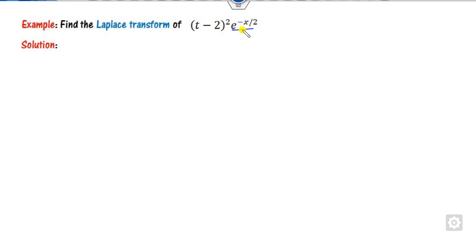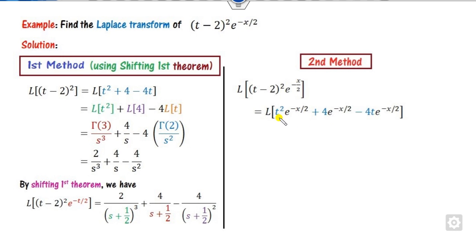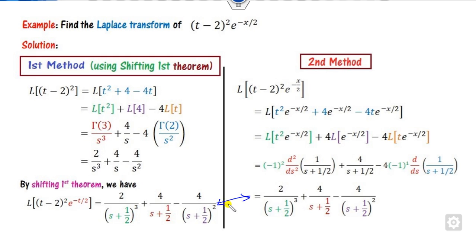Look at the next example — again there is an exponential part, so you can apply the first shifting theorem, or since there is a polynomial, you can apply the multiplication by t rule. The first shifting theorem answer was discussed in the last lecture. For the multiplication by t method, first open the bracket, then take the second derivative of the Laplace of the base function, using (-1) raised to power 2. Find the Laplace of the exponential term, compute the first and second derivatives, and you get the same answer.